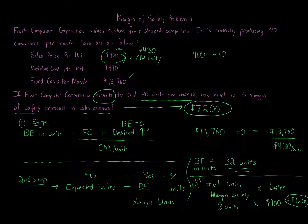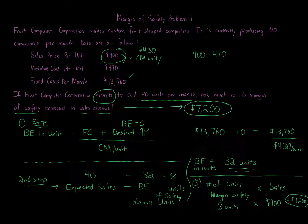To summarize: step one, calculate break-even units. Step two, subtract break-even units from expected sales to get margin of safety units. Step three, multiply margin of safety units by the sales price of $900 per unit to get the revenue amount. That gives us a $7,200 cushion beyond break-even, which shows the company is in a safe position above what it needs to cover costs.